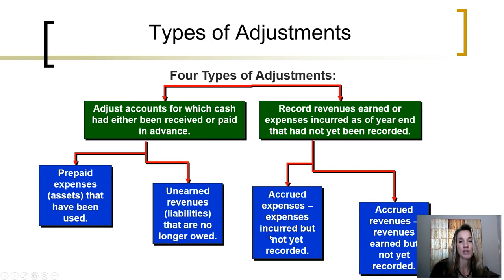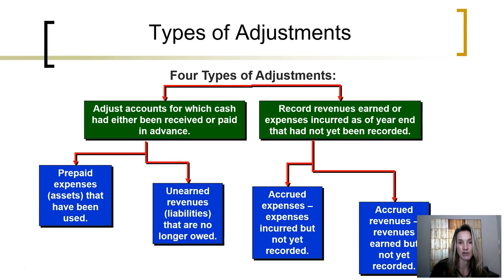When doing these adjustments, there are really four types of adjustments that we need to look at. The first type is to look at prepaid expenses or assets that have been used — for example, the prepaid insurance we just looked through. When we prepay insurance, we have created an asset, and we need to see if any of that asset has been used up as an expense during the period.